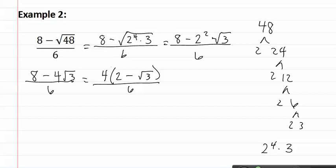Now we are able to reduce, because the four is being multiplied. Two goes into four twice, and two goes into six three times. This gives us two times two minus square root three, all over three.